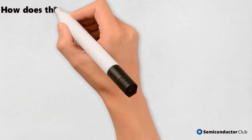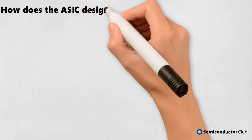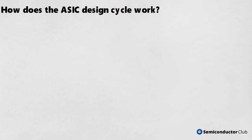Moving on to the last part: how does the ASIC Design Cycle work? It involves 11 steps which are discussed below.